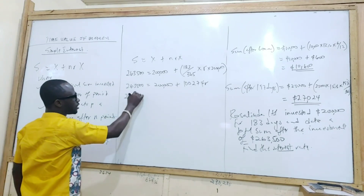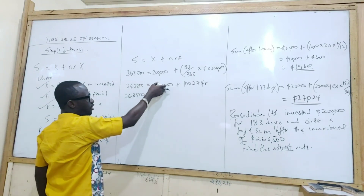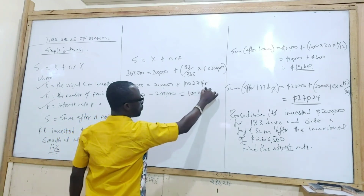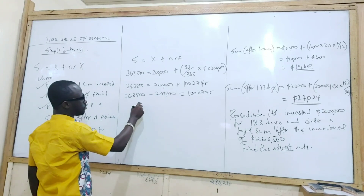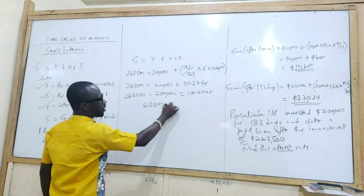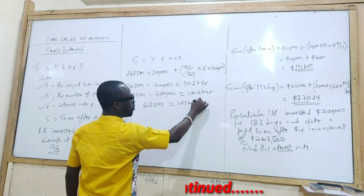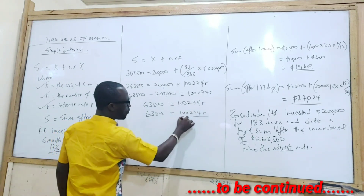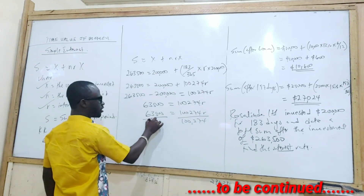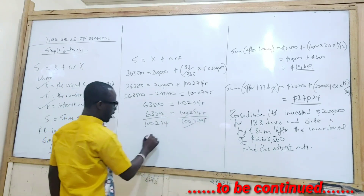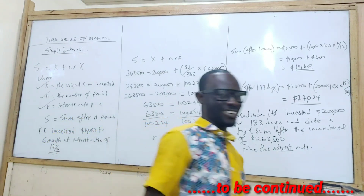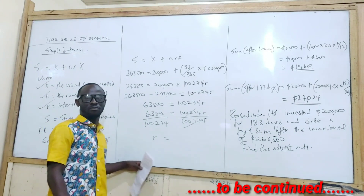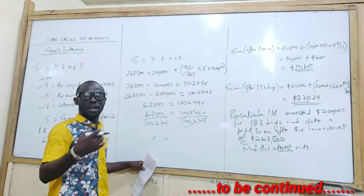Continuing to solve: 63,500 equals 100,274R. Dividing both sides by 100,274 gives R. Then multiply by 100 to express R as a percentage. This gives approximately 126% — or recalculated more carefully, approximately 126% per annum. That is how you find the interest rate when it is the unknown variable in a simple interest problem.